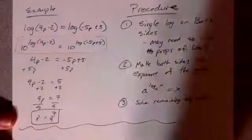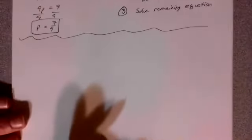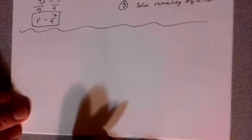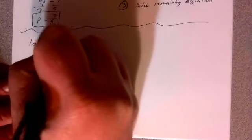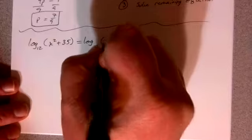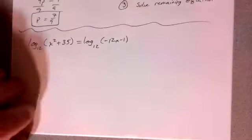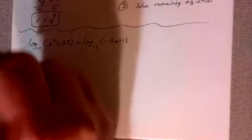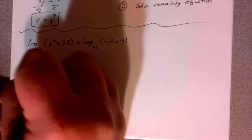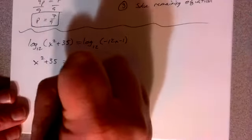Let's take a look at another example. Oh, I like this one so much. We have log base 12 of x squared plus 35 equals log base 12 of negative 12x minus 1. Same base. Arguments must be the same. So 12 raised to that power. I'm skipping this step and I'm left with x squared plus 35 equals negative 12x minus 1.